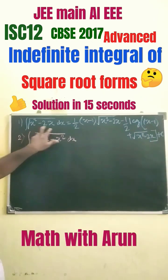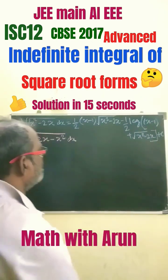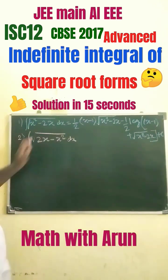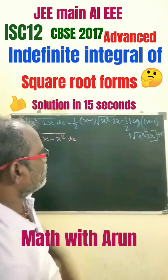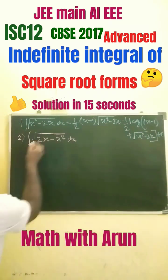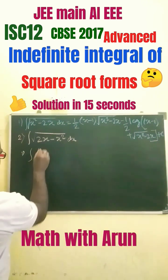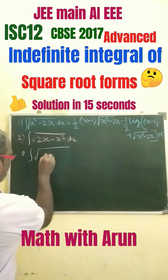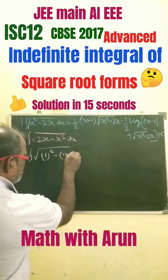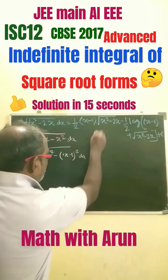Yesterday we solved this problem in 15 seconds. So just when the signs are interchanged, we need to find how to solve it and what the result is. This can be done as the integral of the square root of 1 squared minus (x minus 1) whole squared dx.